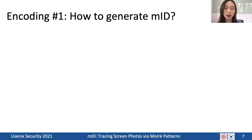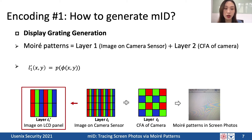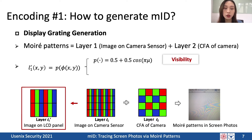For encoding, the first question is how to generate MID. To generate MID, we first generate a display gridding, which acts like the carrier signal in communications. Moiré patterns in screen photos are the superposition of the image on the camera sensor and the CFA of the camera. We can only modify pixels on the screen, expressed as an equation with a periodic function and a face function. The periodic function determines the frequency of the generated moiré patterns, and we set the periodic functions so that patterns are visible at common shooting distances.